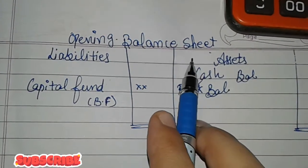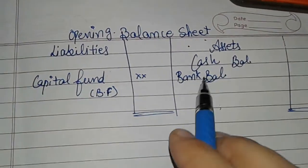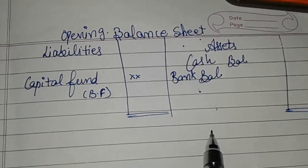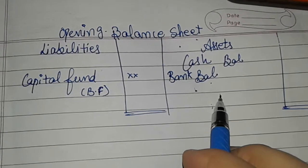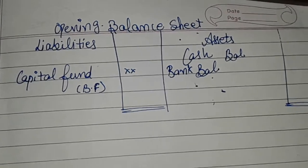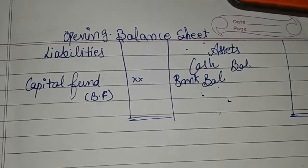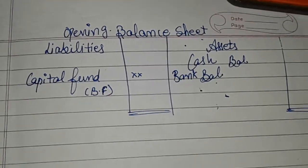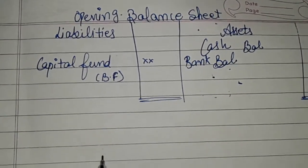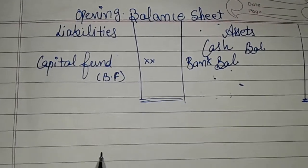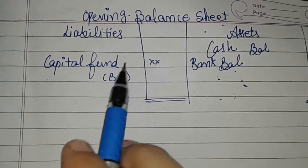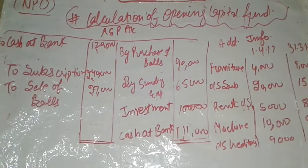The opening balance sheet is linked with the previous year. First, write down the cash and bank balance from the receipts and payments account of the previous year, not the current year. After writing those balances, move on to the assets and liabilities information. The balances of assets and liabilities of the previous year are written in this balance sheet. After posting all previous year information, the last step is to take the difference — the difference between assets and liabilities is the capital fund, which is your balancing figure.